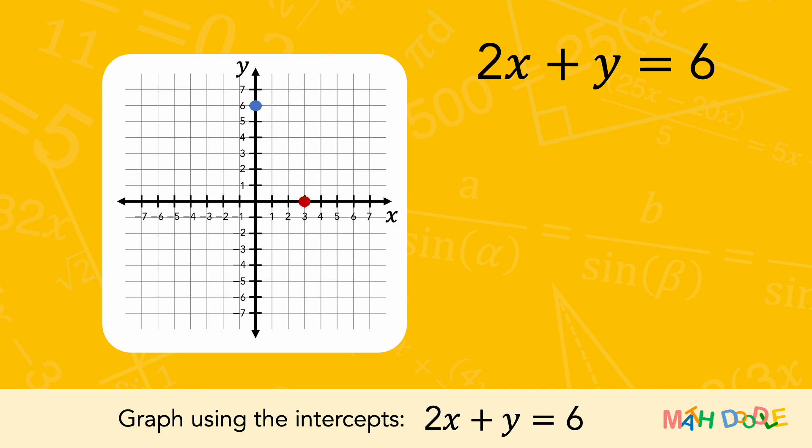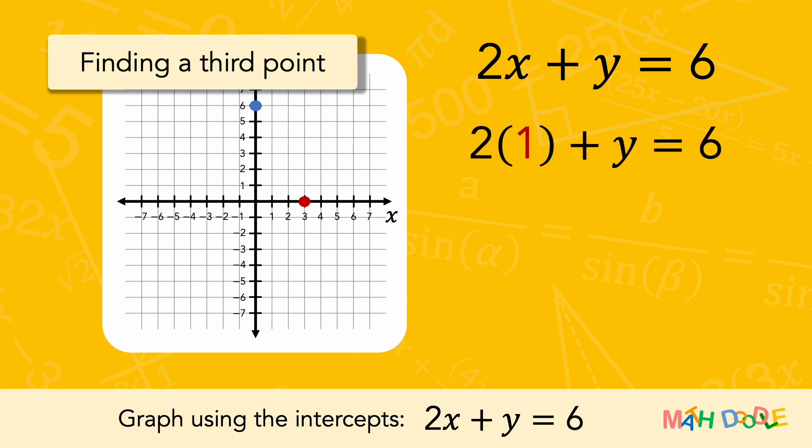To ensure the accuracy of the line, let's find another point the line passes through. For example, let's find the value of y when x is 1. To solve the equation for y, let's subtract 2 from both sides.